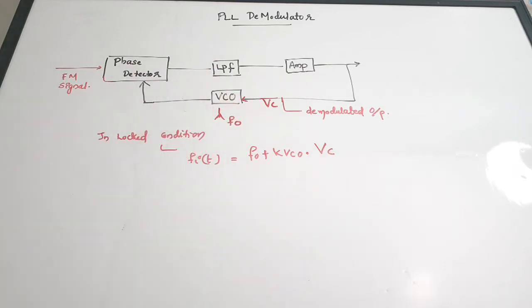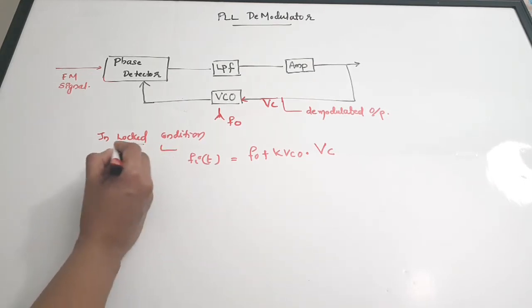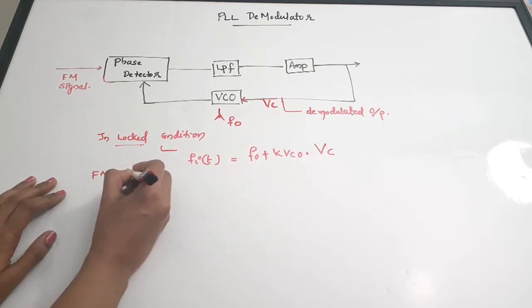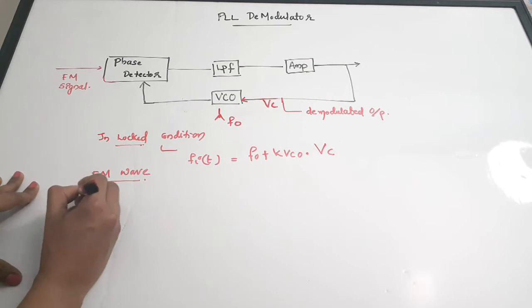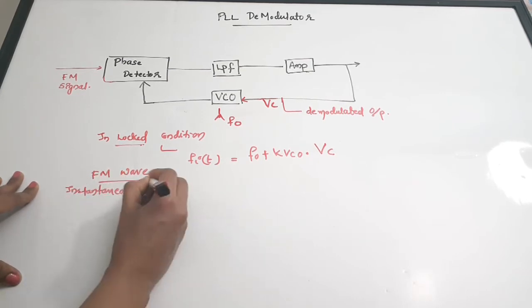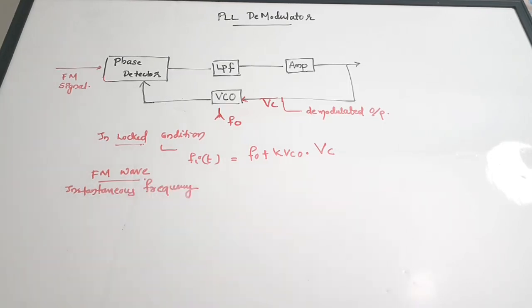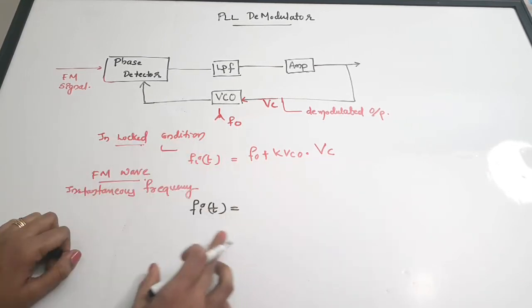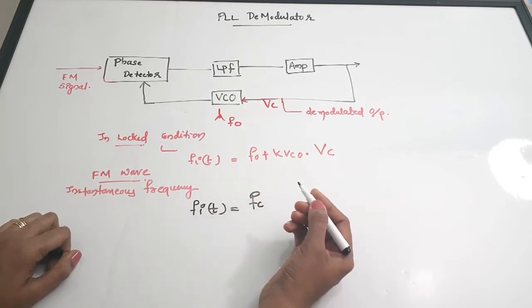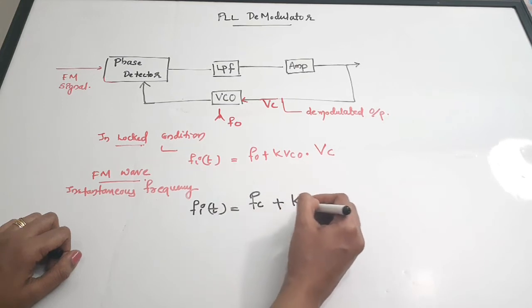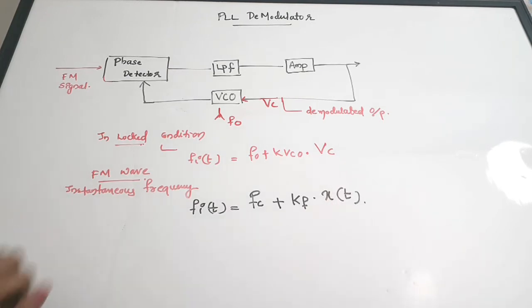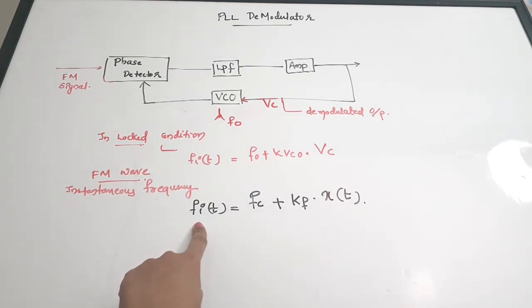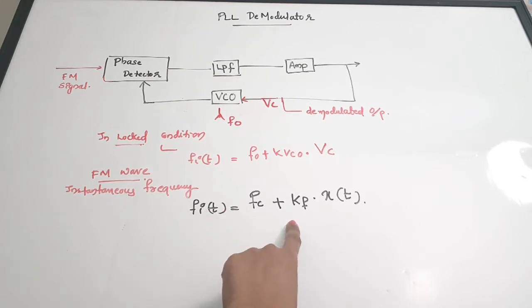This is the relation for the locked condition — Equation 1. Now, for an FM wave, the instantaneous frequency is given by a relation we already studied in the FM basics video: FI(t) is equal to FC plus KF into X(t).